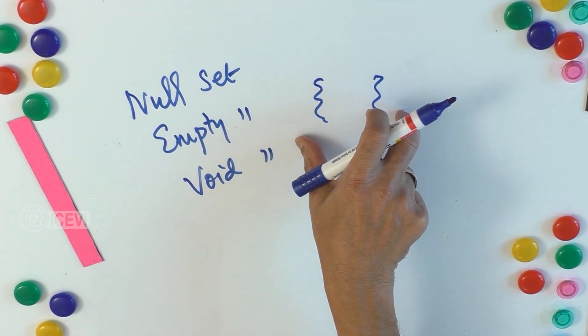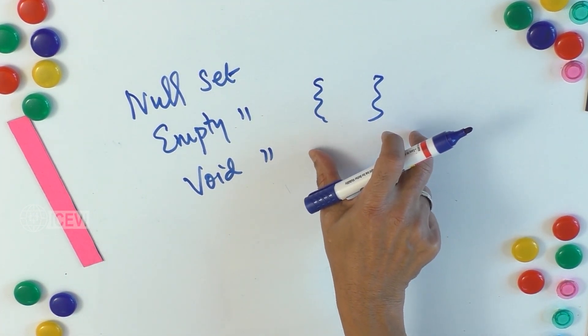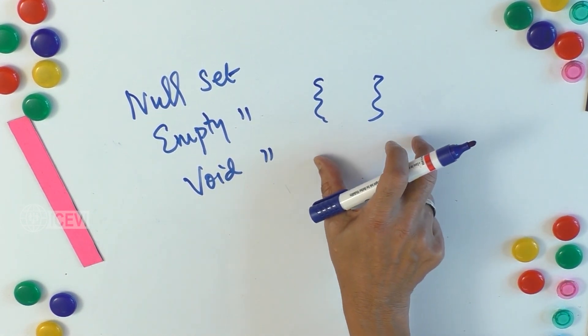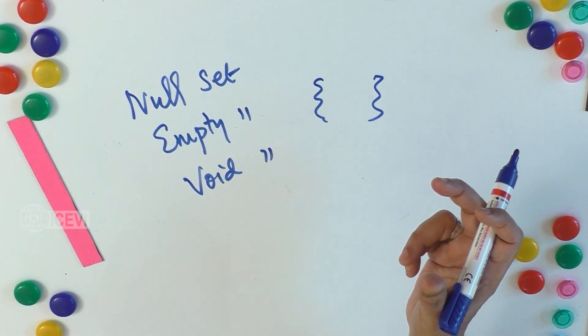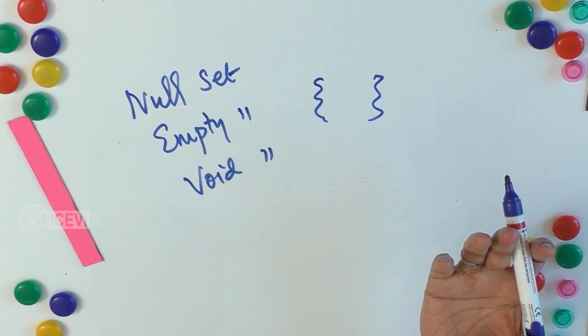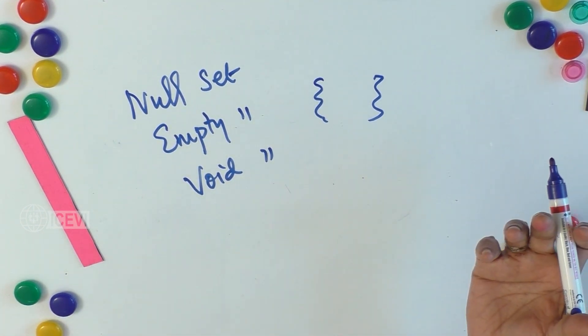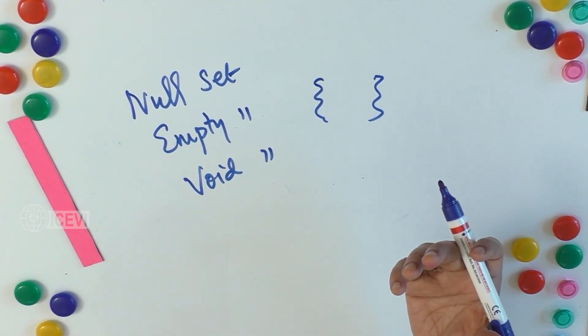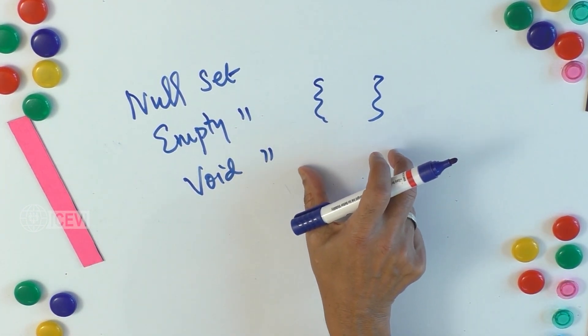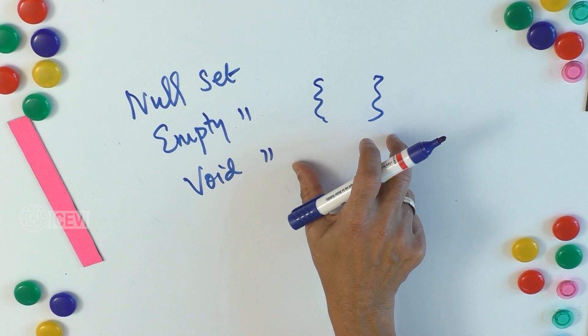Sometimes we come up with unrealistic elements. For example, when you say horses with six legs—horses have only four legs. Now suppose you come up with the category horses with six legs. So that means it is a null set, an empty set.